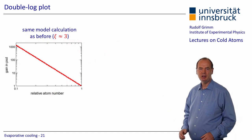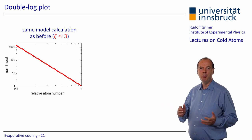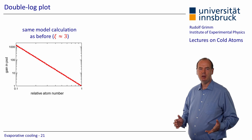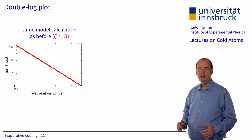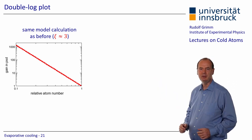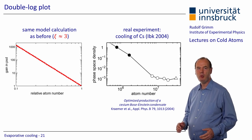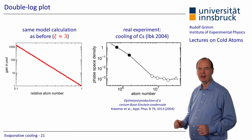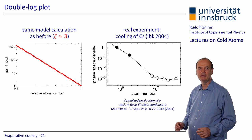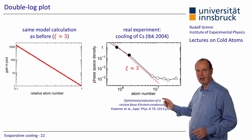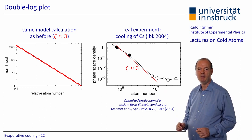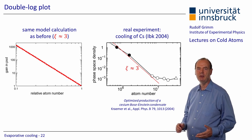Let's plot the results of our model calculation for forced evaporation in a different way. We show the gain in phase space density as a function of the relative atom number, both on a logarithmic scale. Such a double-log plot is commonly used in our field, and you find it in many papers on evaporative cooling, as the slope directly shows the efficiency. In our model calculation, we obtain a value for Xi of about 3. And here are some results from an experiment on evaporative cooling of cesium atoms from our early work on the optimized production of a cesium Bose-Einstein condensate, published in 2004. The final cooling stage starts with 10^7 atoms and ends with 10^6 atoms. With an efficiency of about 3, we lose one order of magnitude in the atom number and gain three orders of magnitude in phase space density until we finally reach BEC.